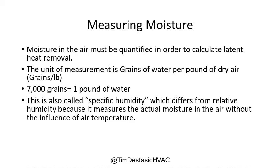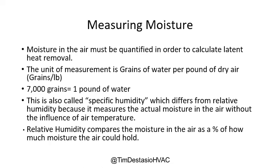Specific humidity differs from relative humidity. Specific humidity measures the actual moisture in the air — the actual number of grains of moisture — without the influence of air temperature. Relative humidity compares the moisture in the air as a percentage of how much moisture the air could hold. Think of it like a sponge: if you pour a cup of water on a very large sponge, the cup of water is your specific humidity, and when you pour it into the sponge, that ratio of how much water the sponge holds compared to how much it could hold is your relative humidity — a percentage.